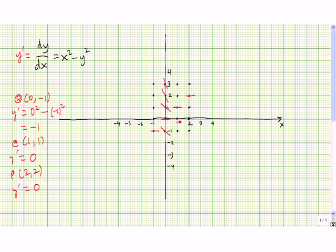Likewise, let's take a look at the point (1,-1). At (1,-1), x squared is 1 and y squared is 1 as well, so x squared minus y squared is going to be 0. In fact, any time the magnitude of x and y is the same, we're going to square the negative portion and that makes it positive. So any time, whether it's positive or negative, if the number portion is the same, x squared minus y squared will be 0. So at (-1,1) it's going to be 0, and also at (1,-1) it's going to be 0.